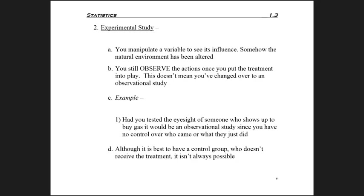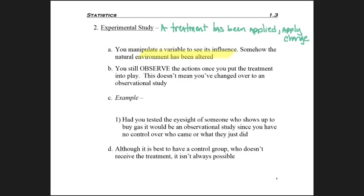A second type of study is called an experimental study. The key to this is that you have some sort of treatment that has been applied. Importantly, you're applying change — it's best to think of it as having manipulated a variable to see its influence. Ultimately, the environment has been manipulated or altered one way or another.